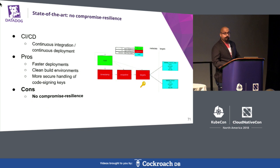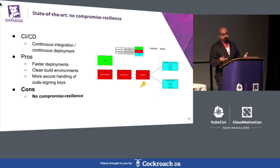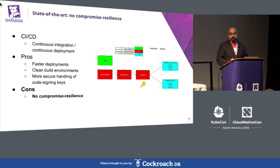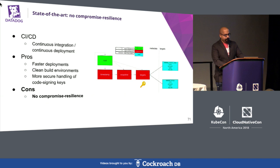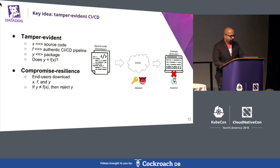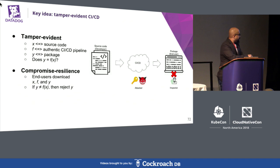Unfortunately, this is considered state-of-the-art in the industry. The conventional wisdom has been that there is a necessary trade-off between security and availability. We cannot expect developers to build and sign packages whenever source code changes — that is what CI/CD systems are good for. So the thinking has been that we must blindly trust our CI/CD systems to build and sign packages on demand, at the risk of zero compromise resilience. Fortunately, this does not have to be the case.